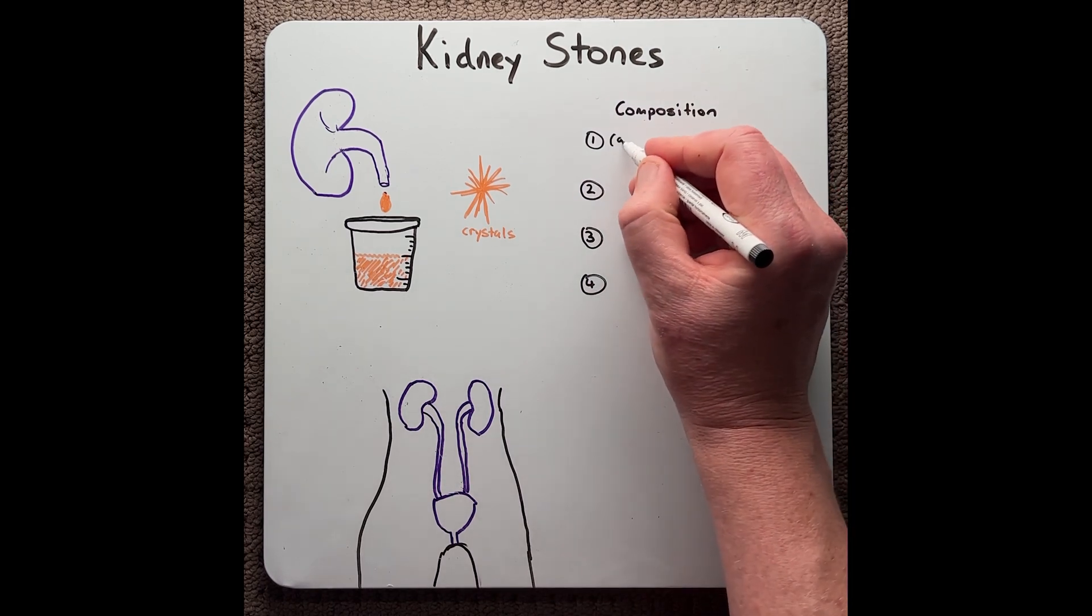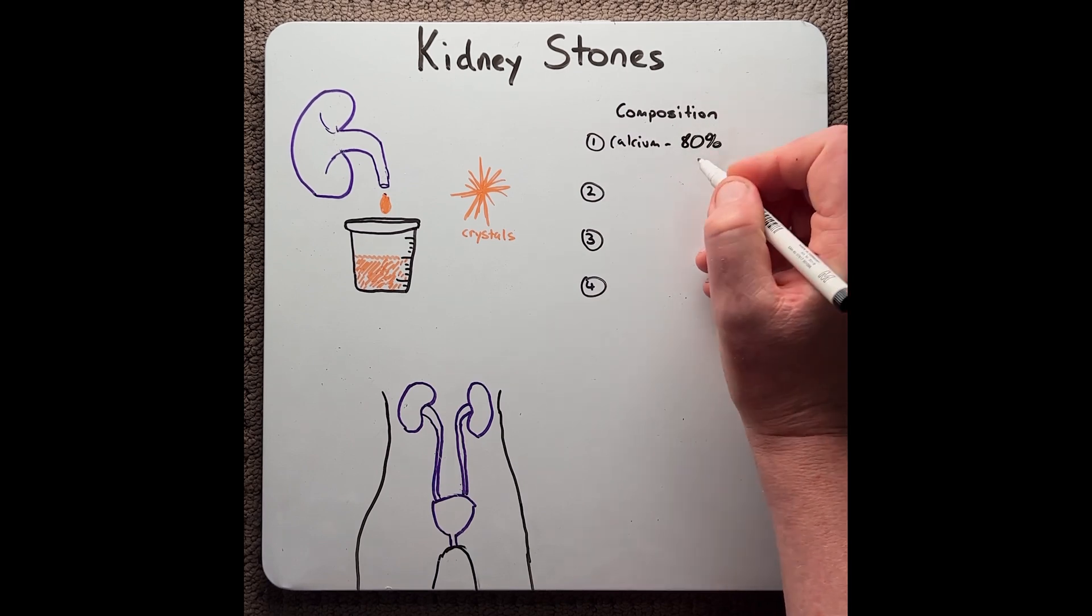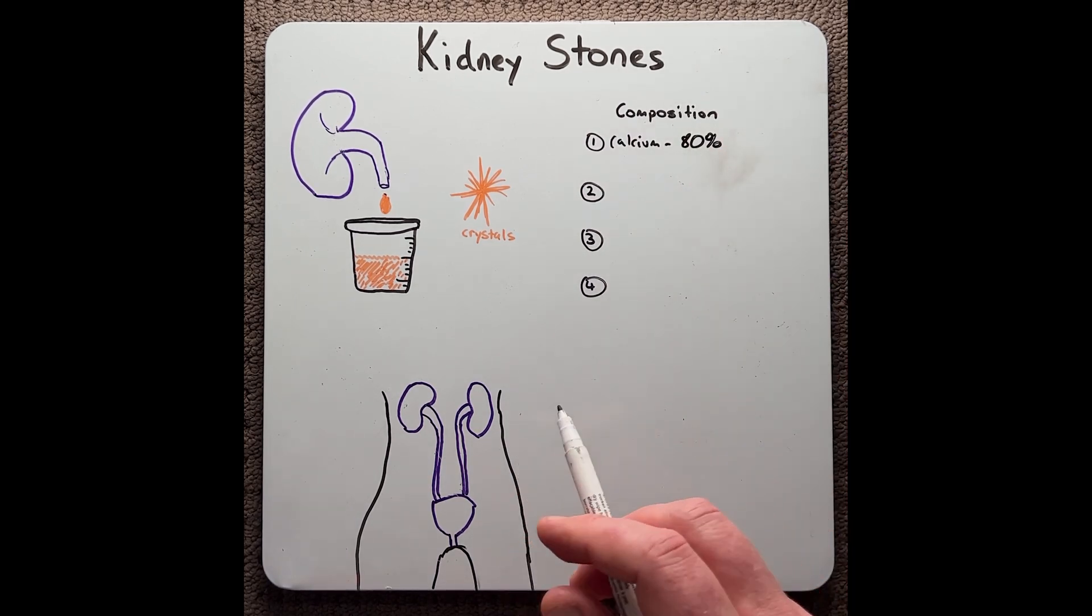Number one are calcium-based. This is approximately 80% of all stones. Examples would be calcium oxalate or calcium phosphate.